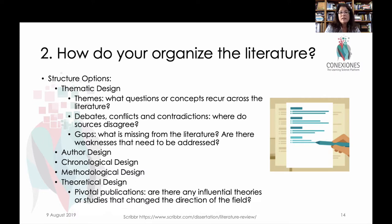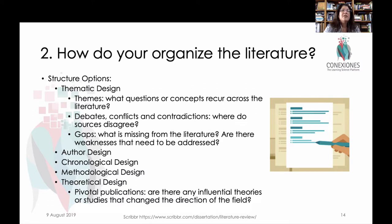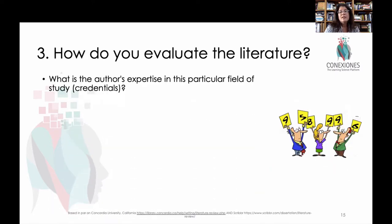A final option is theoretical design — circling around pivotal publications or key turning points in the evolution of thinking on the topic, mixing the chronological perspective with different theoretical development. It can work, but it all depends on the type of story you're trying to tell. A big decision you'll have to make is whether to order your literature review by themes, by author, by chronology, by methodological design, or by the theories they represent.